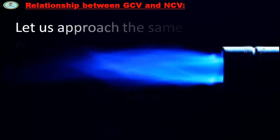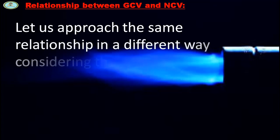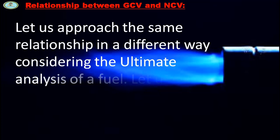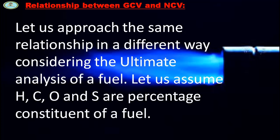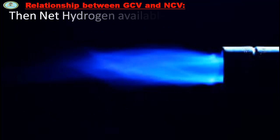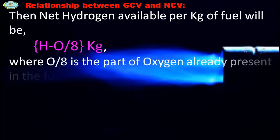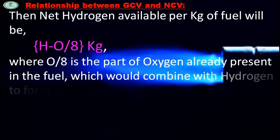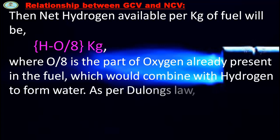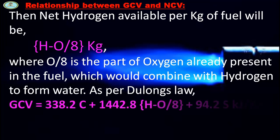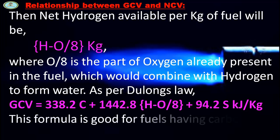Approaching the same relationship differently using ultimate analysis: let H, C, O, and S be the percentage constituents of the fuel. Net hydrogen available per kg of fuel is (H − O/8) kg, where O/8 is the portion of oxygen already present in the fuel which combines with hydrogen to form water. Using the Dulong formula: GCV = 338.2C + 1442.8 × (H − O/8) + 94.2S kJ per kg. This formula is valid for fuels having carbon content up to 80%.